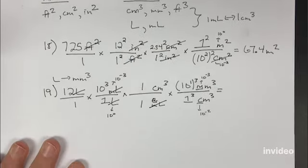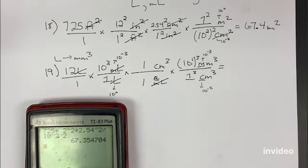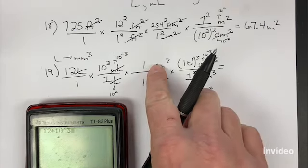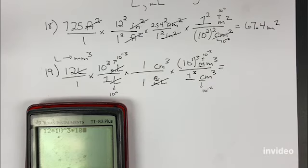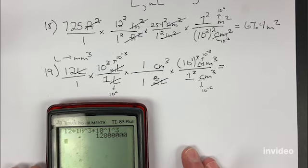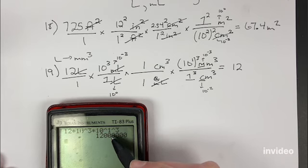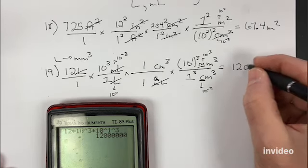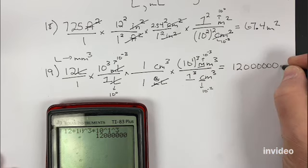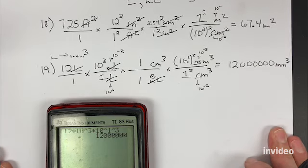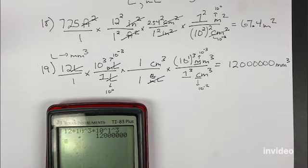Doing the math: 12 times 10 to the third times 1 times 10 to the first cubed. That gives 12,000,000 cubic millimeters. Volume can be a bit tricky because liters isn't cubed. We only need to cube both our numbers if both units are cubed. Let me do a couple more volume problems.